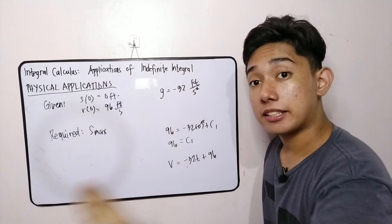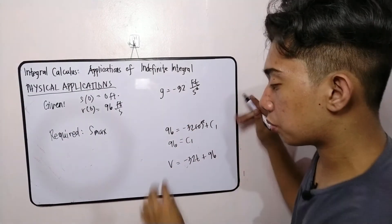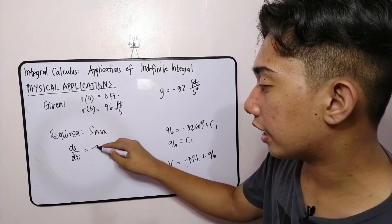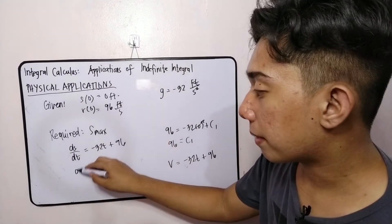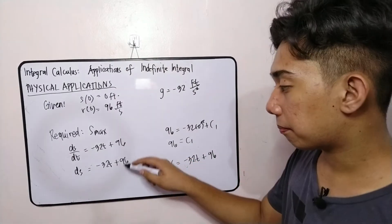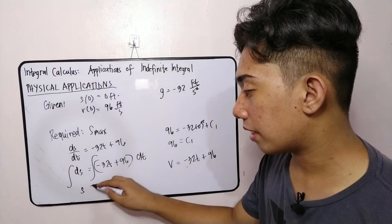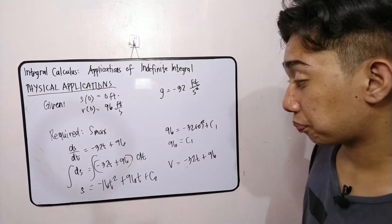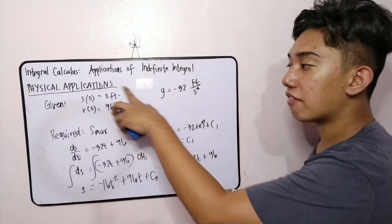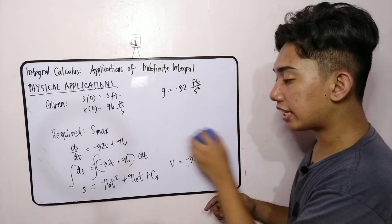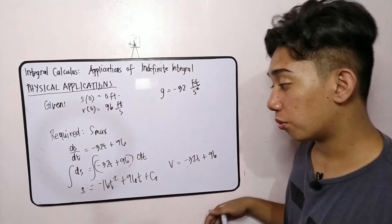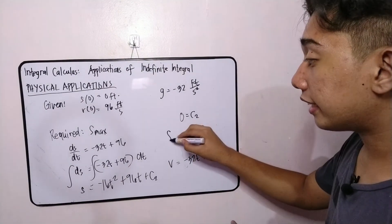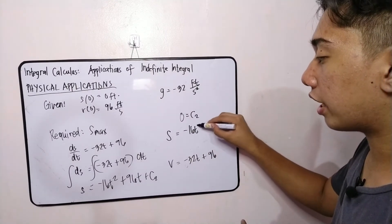Now, we will use this one to get the displacement function. So to get the displacement function, we will replace this velocity as the derivative of the displacement with respect to time is equal to negative 32t plus 96. Then you separate the variables. This becomes negative 32t plus 96 dt. We integrate so that it will become s is equal to negative 16t squared plus 96t plus c sub 2. Then, we have our initial case. So our initial case here is s of 0 is equal to 0. So therefore, our s here since 0 naman lahat yan, therefore, our constant here is 0. Completing the velocity function as negative 16t squared plus 96t.